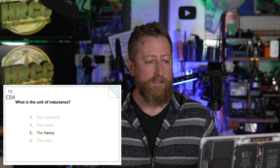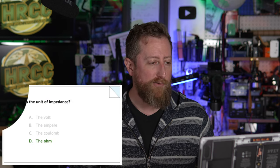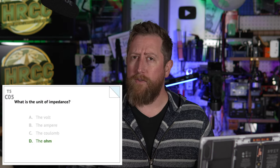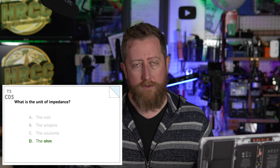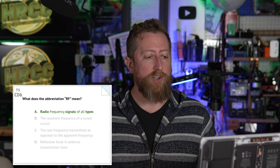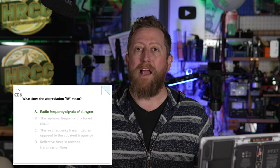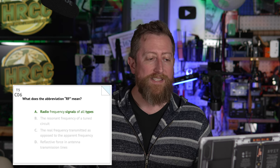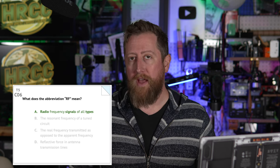Charlie 04: what is the unit of inductance? The answer is C, the Henry. Charlie 05: what is the unit of impedance? We already saw this earlier, so they're driving this question home. It is the ohm. Charlie 06: what does the abbreviation RF mean? The answer is A, radio frequency — signals of all types. Radio frequency is the answer specifically.